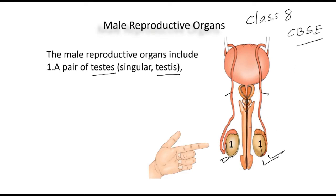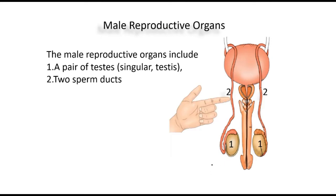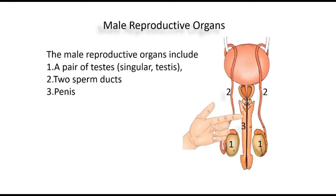Number two, these are called sperm ducts. And the third one is called penis. These three are very important parts as far as your syllabus is concerned. We have two testes, two sperm ducts, and a penis. So there are two testes here — that is why it is called a pair of testes.